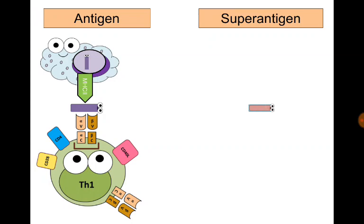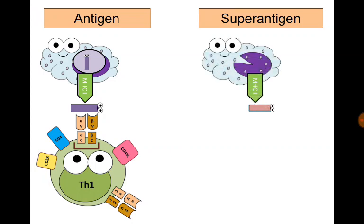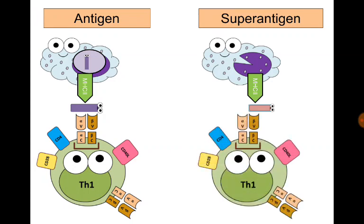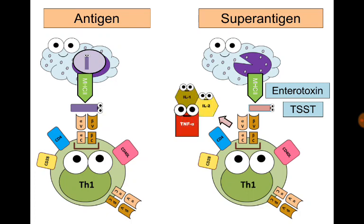However, a superantigen attaches to the MHC class 2 molecule and the variable portion of the beta chain only, like a clamp, without entering an antigen-presenting cell. Some antigens act as superantigens this way — like enterotoxins and the toxic shock syndrome toxin of staphylococci — resulting in simultaneous activation of large numbers of T-helper cells and production of large quantities of pro-inflammatory cytokines, like interleukin-1, interleukin-2, and tumor necrosis factor alpha.